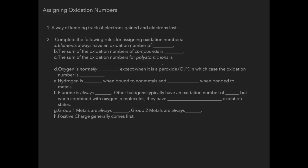So let's look at some rules with regards to assigning oxidation numbers. Oxidation numbers are simply a way of keeping track of how many electrons are gained, how many electrons are lost, and by whom. So in order to understand oxidation reduction reactions we have to be able to assign these oxidation numbers.